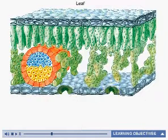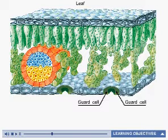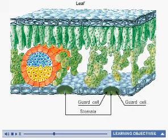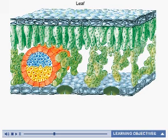A pair of guard cells controls the opening and closing of the stomata, which in turn controls the rate of transpiration. Factors that influence the rate of transpiration include the availability of water in the soil, relative humidity, amount of sunlight, and temperature.